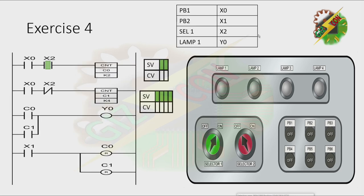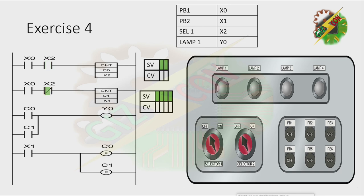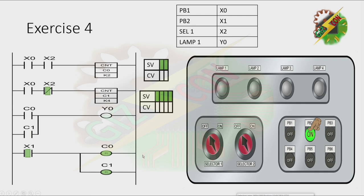Let's continue. The selector switch is on. Let's press PB1, then press PB1 again. And because C0 is activated, the normally closed C0 will turn on and that will cause Y0 to turn on here. Now let's press PB2 — because PB2 is pressed, C0 and C1 will be reset. Now let's turn off the selector switch, then press PB1 four times. And because C1 is activated, the normally open contact of C1 will be activated and that will cause Y0 to turn on. Now let's press PB2 and C1 will be reset. That's how we solve exercise 4.